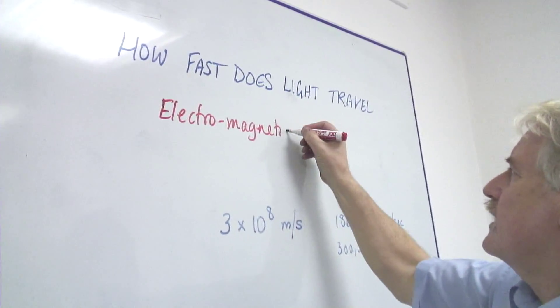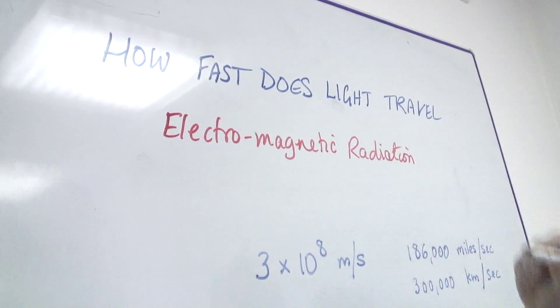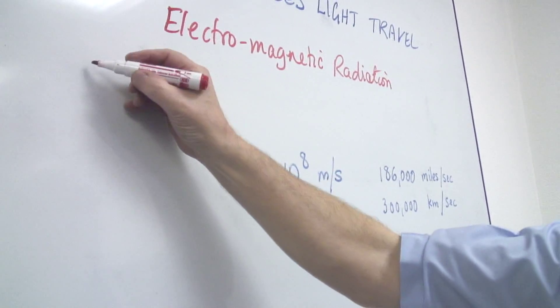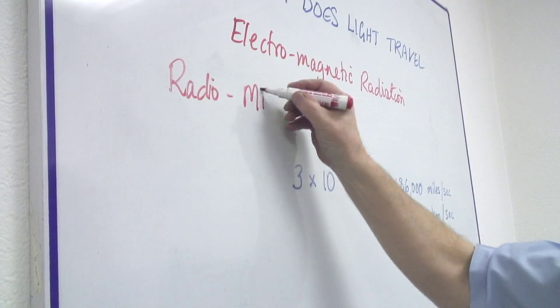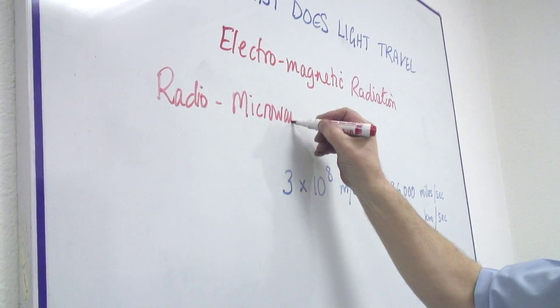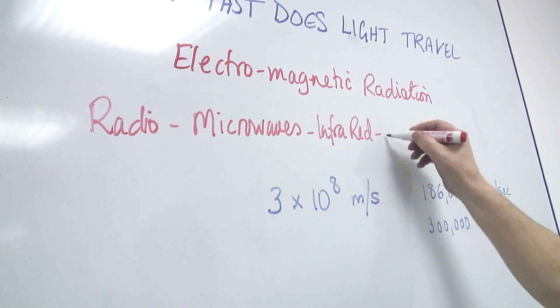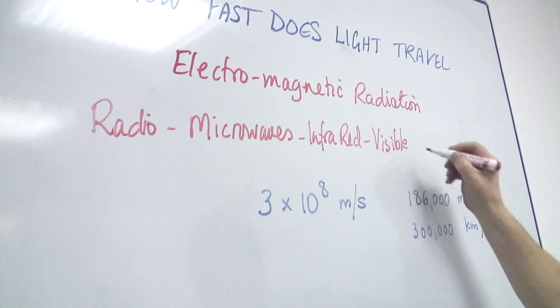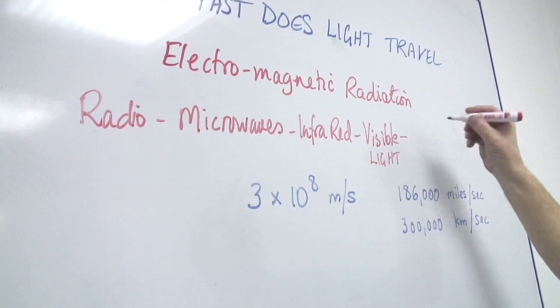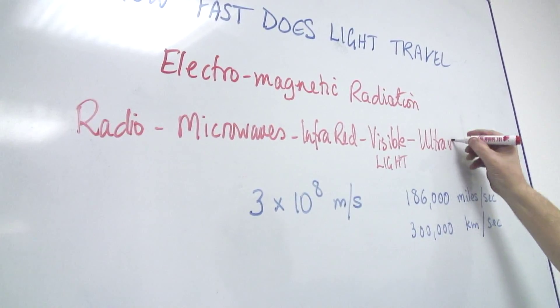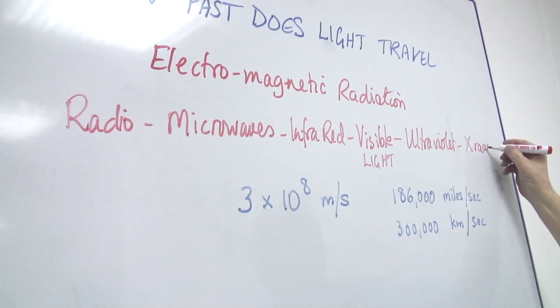Now electromagnetic radiation comes in many forms, starting at one end we have radio, then we have microwaves, and next to microwaves we have infrared, and then we have visible radiation which we call light. And then we have ultraviolet and onto x-rays at this end.